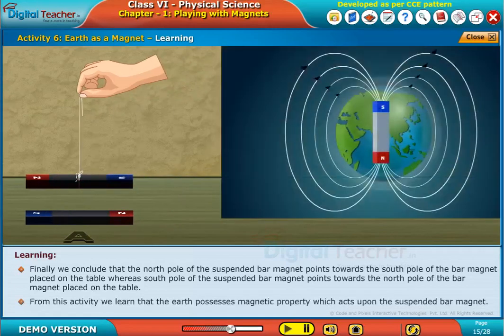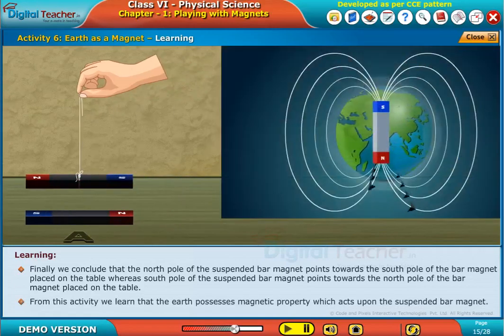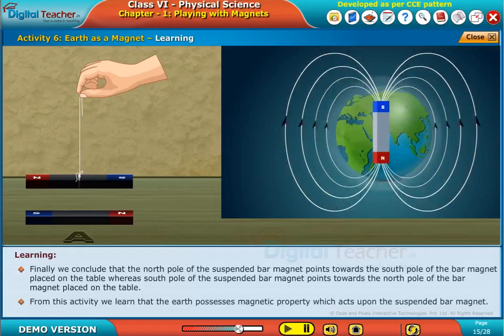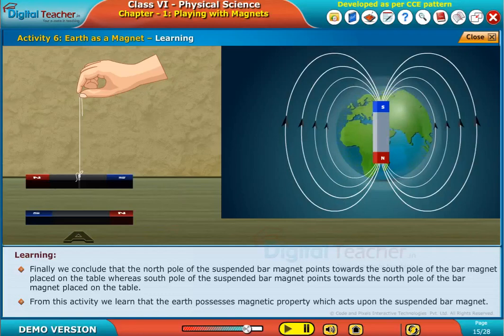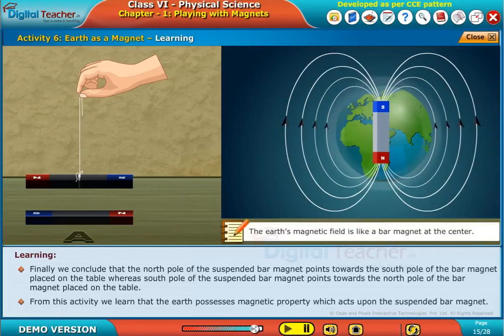From this activity, we learn that the earth possesses magnetic property which acts upon the suspended bar magnet. Note: The earth's magnetic field is like a bar magnet at the center.